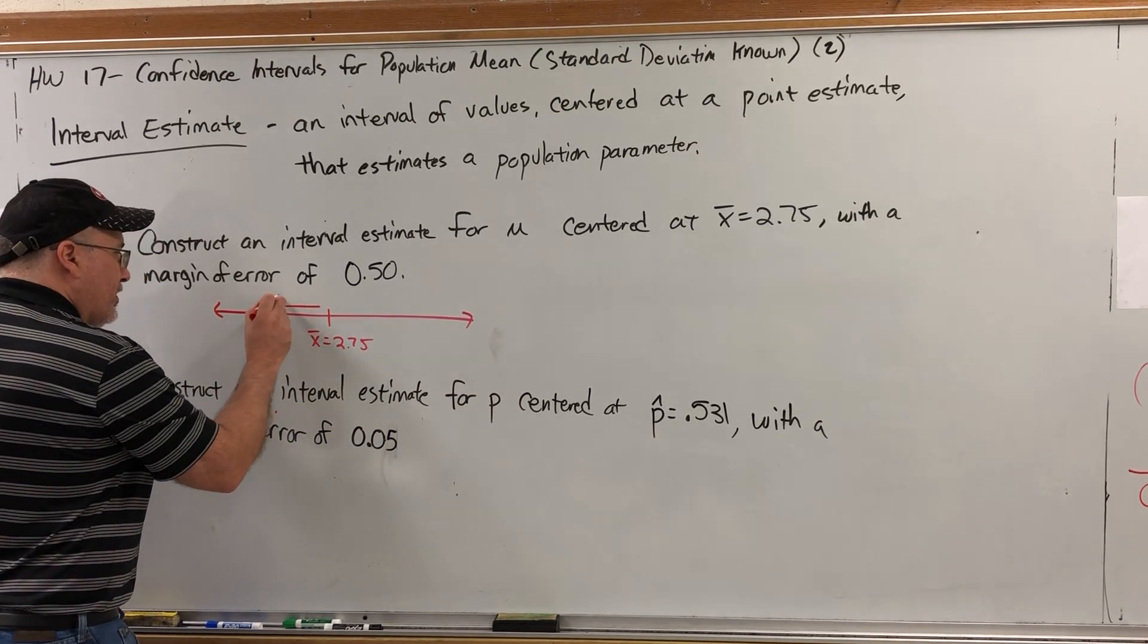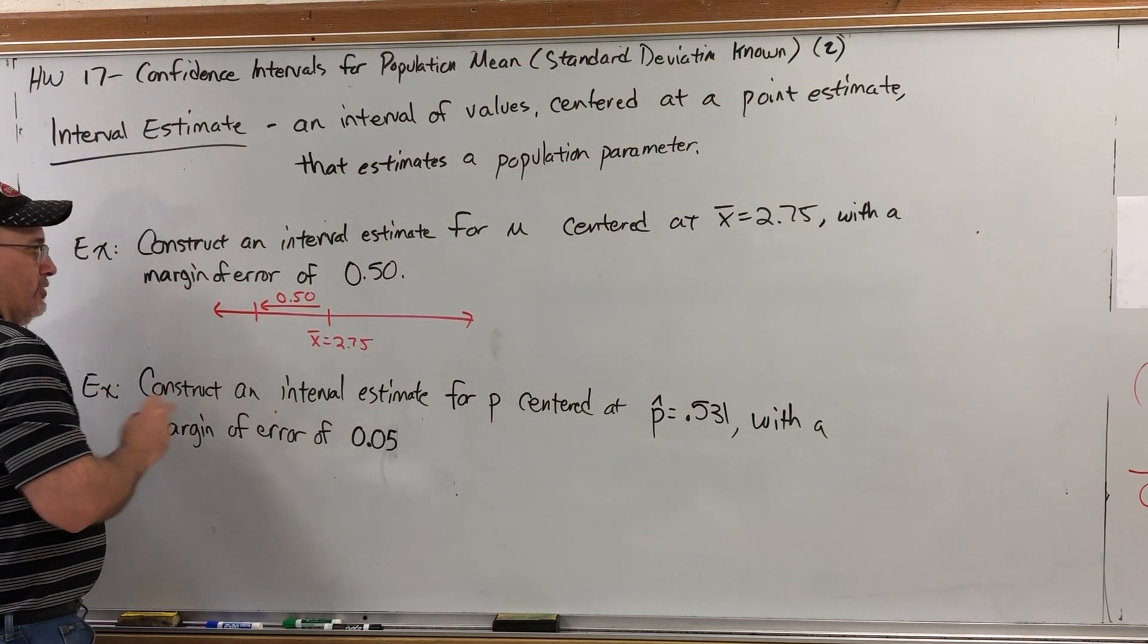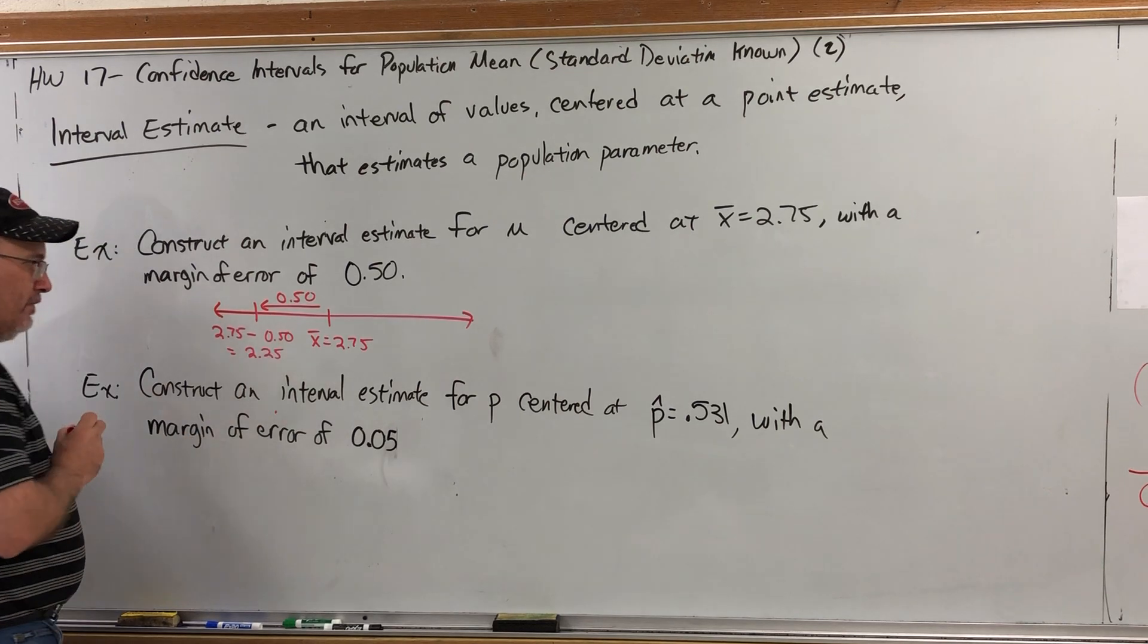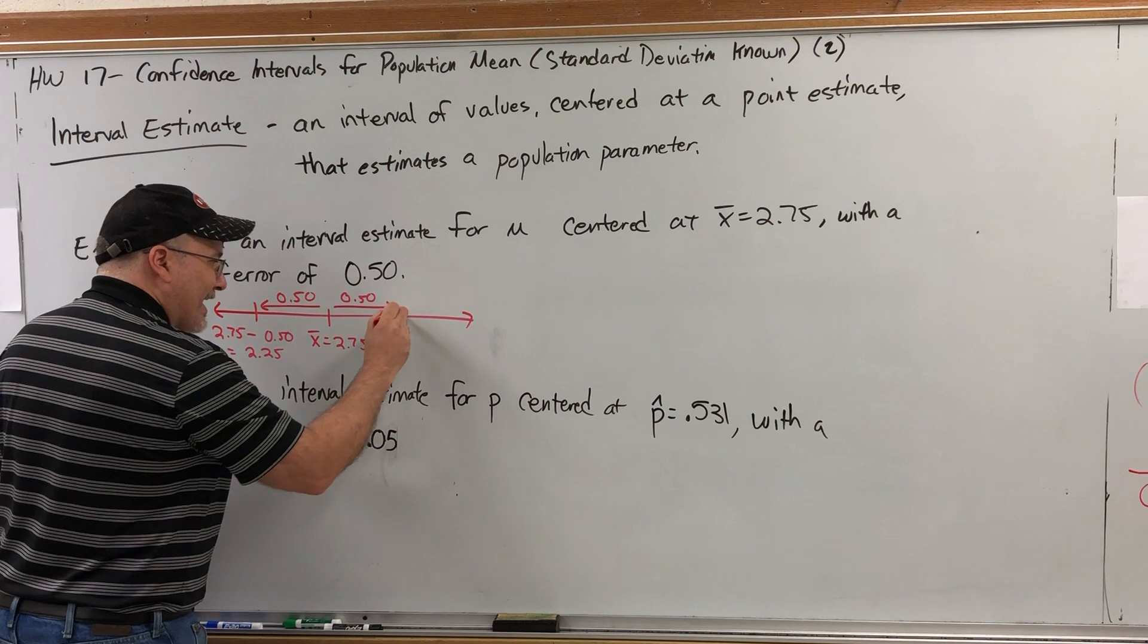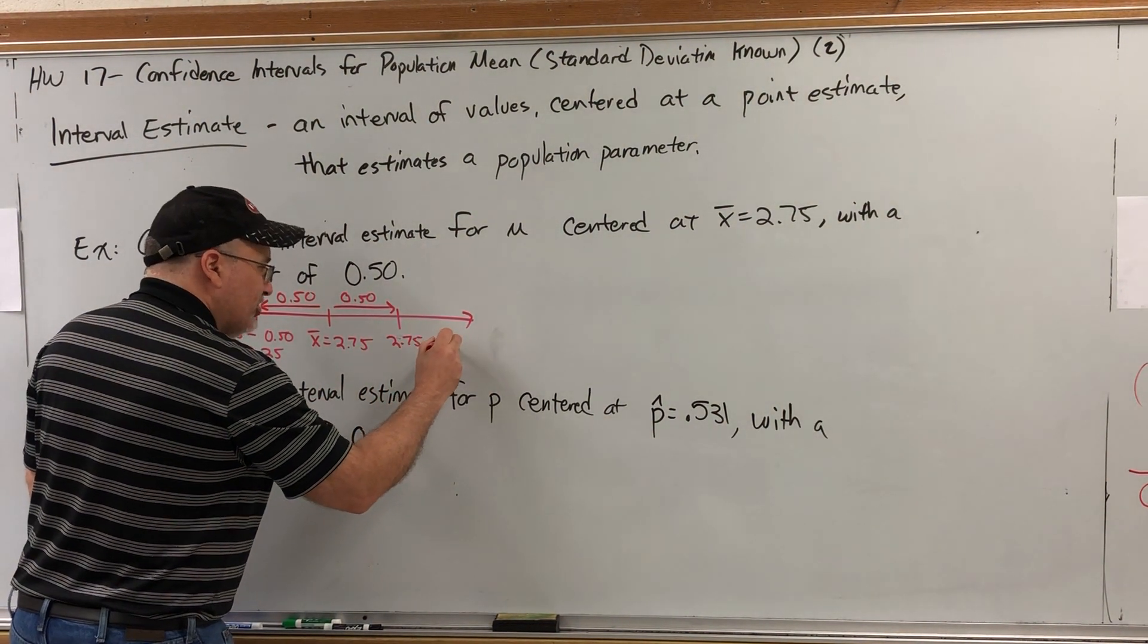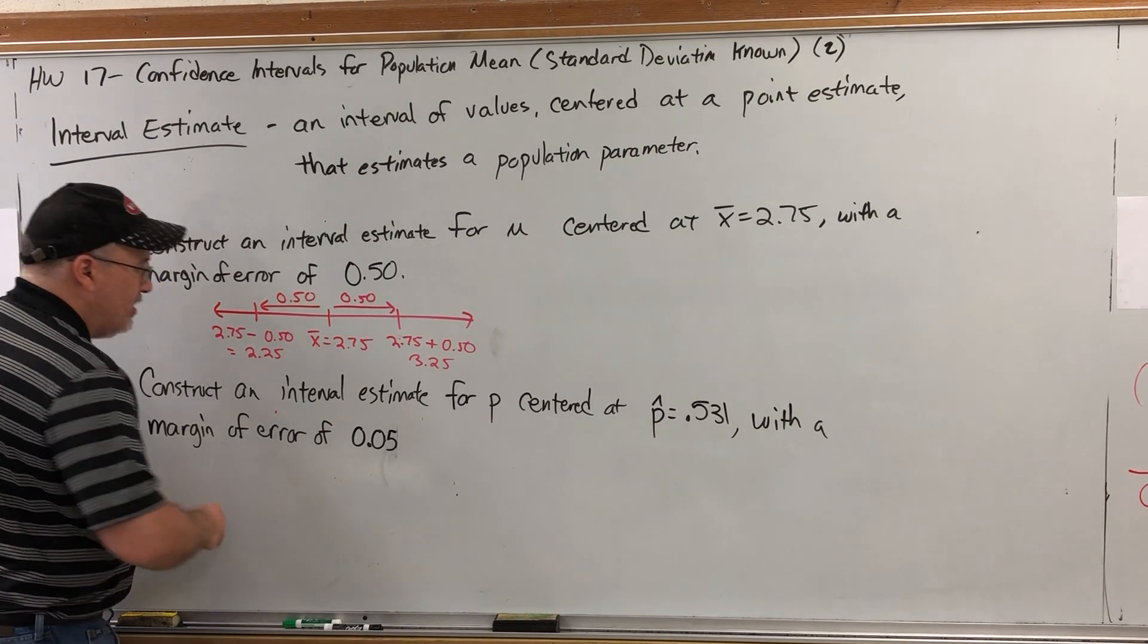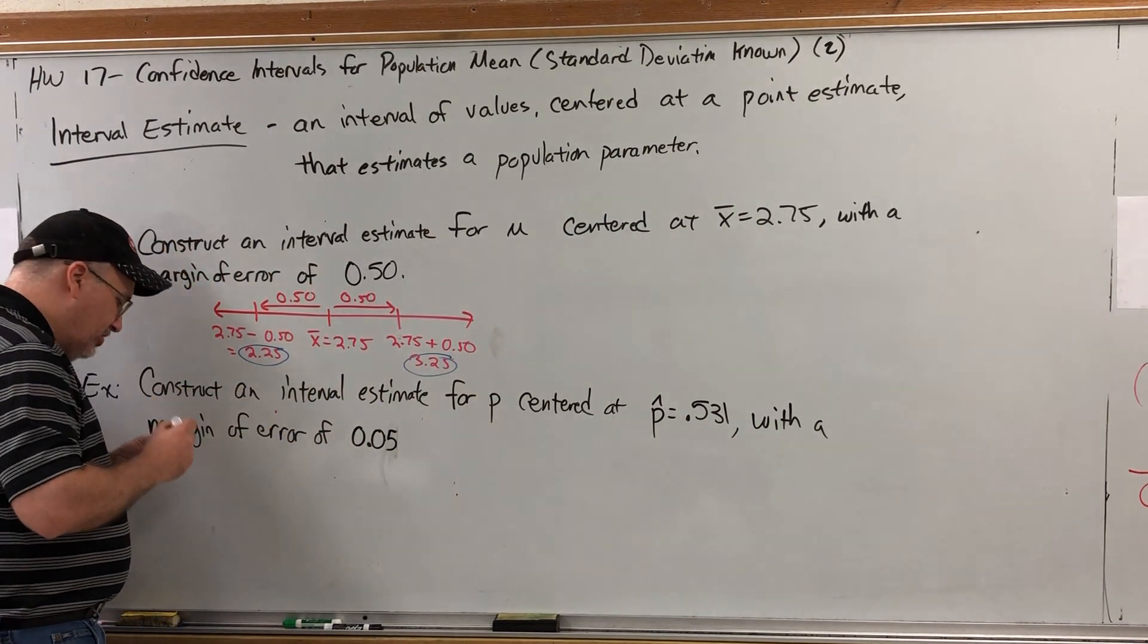So if we were to go 0.50 to the left, then the left end of this interval would be 2.75 minus 0.50, which equals 2.25. And if we go the margin of error 0.50 to the right, that would put us at 2.75 plus 0.50, which is 3.25. So now we have an interval of values by going the same distance to the left and to the right of the center.